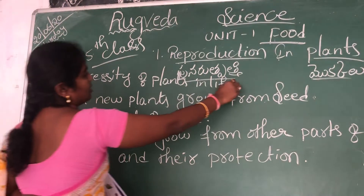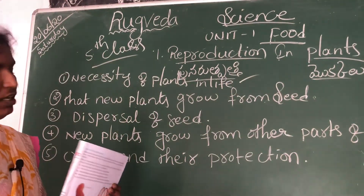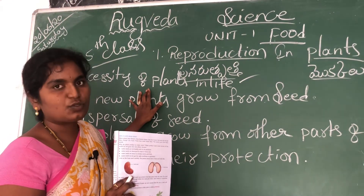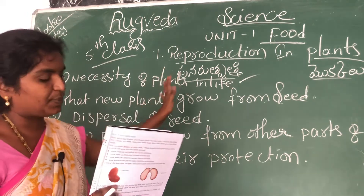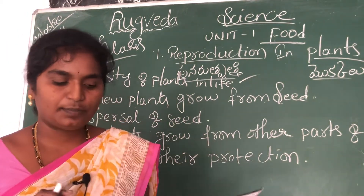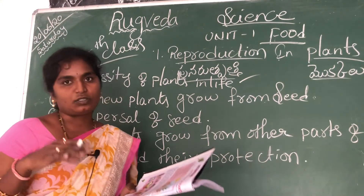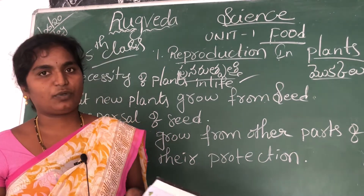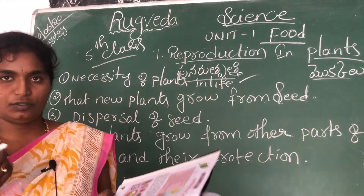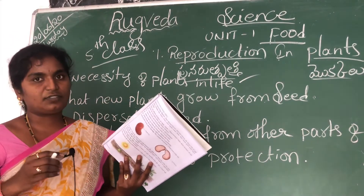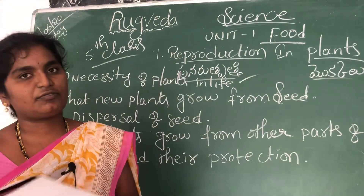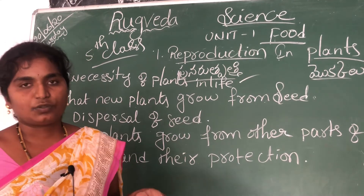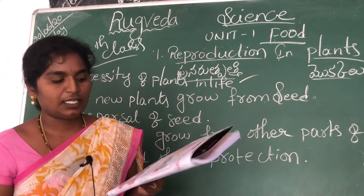First, necessity of plants in our life — this means how plants are necessary to our life. All living things depend upon plants to live and grow. Not only human beings, but animals also depend upon plants to live and grow, and to get food. Some food we get from animals and some from plants — that is how we depend upon plants.